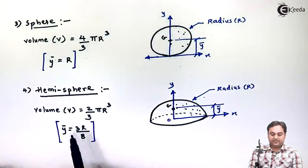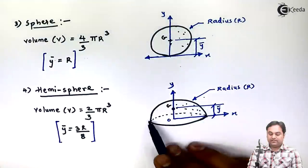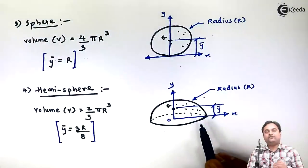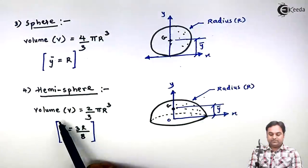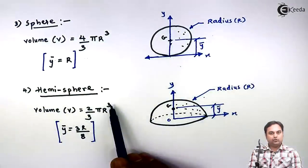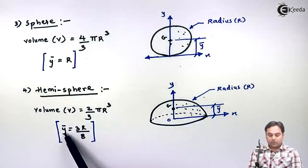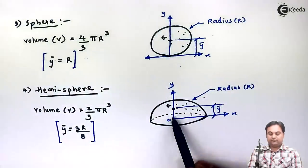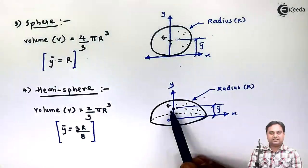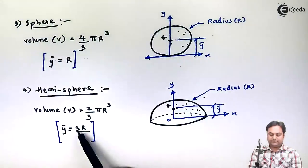At last we have CG for a hemisphere. Hemisphere here we are considering is the half of the sphere, having radius R. Its volume is 2/3 πR³. ȳ is the location of CG for this hemisphere from the bottom or from X axis, and this ȳ value is 3R/8.